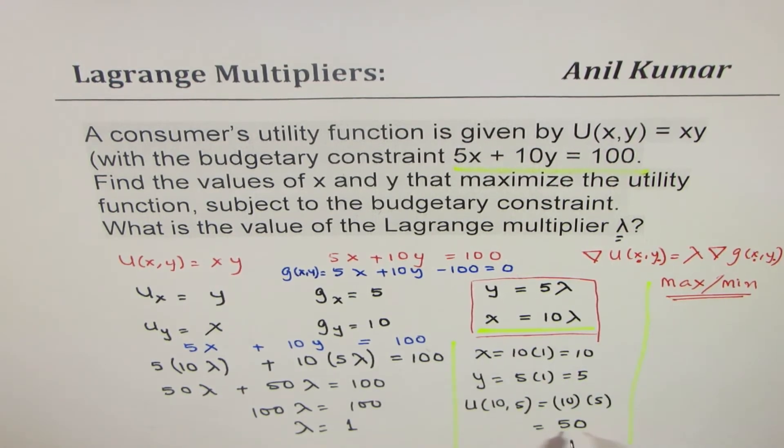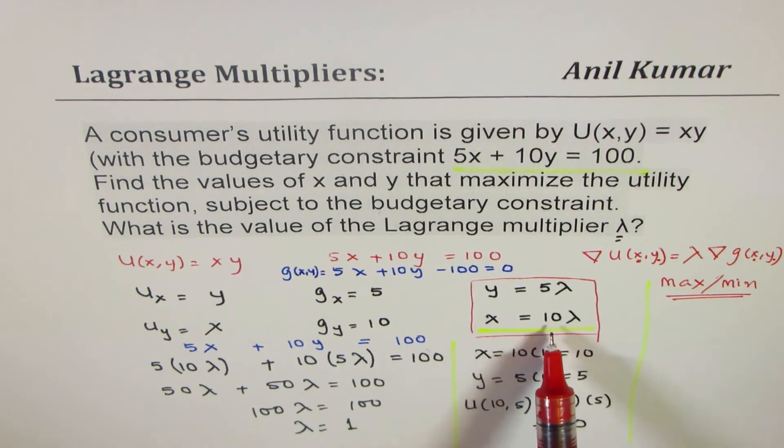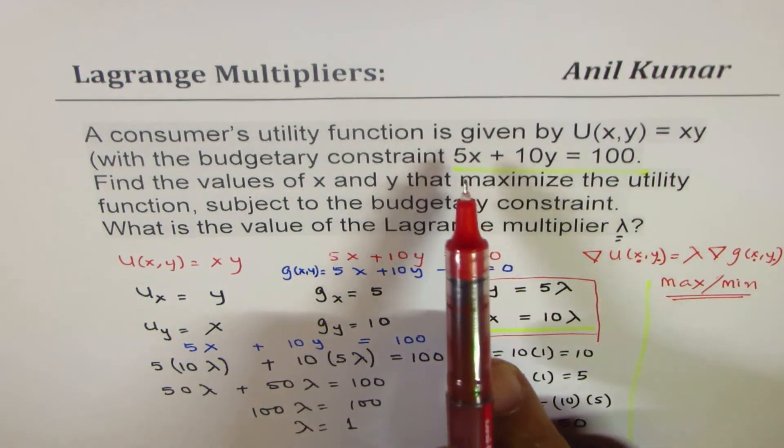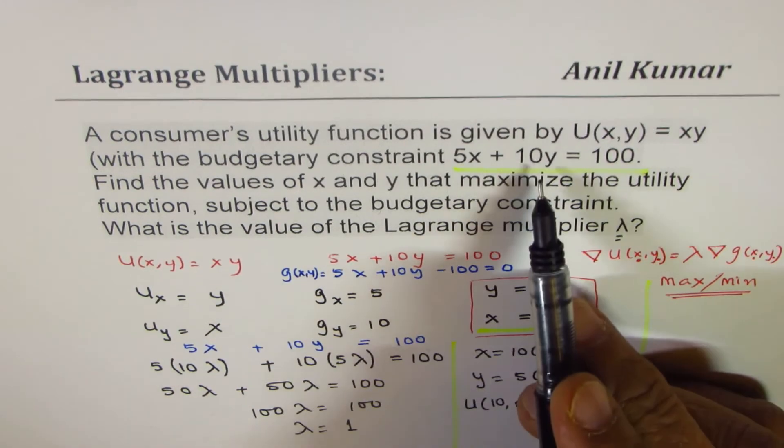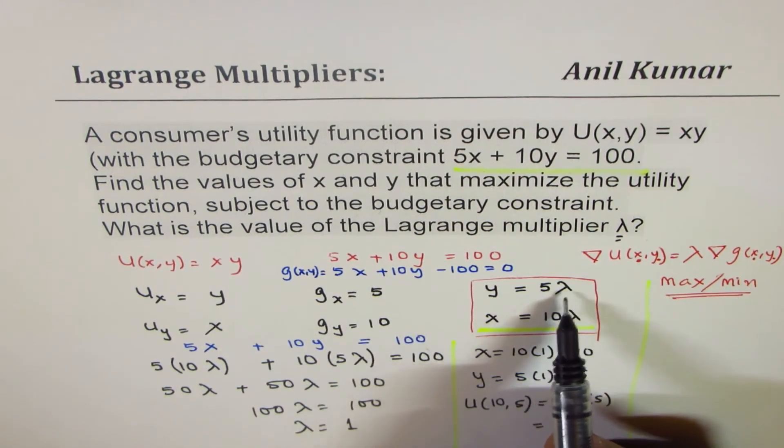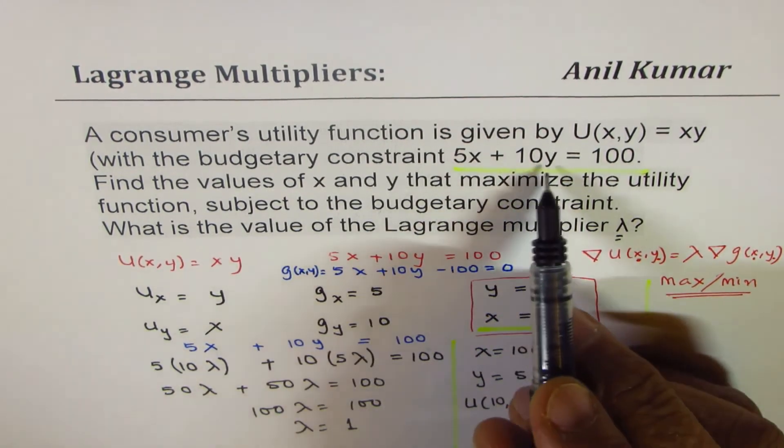So in our case, we found that x is 10, y is 5. This is our equation. So what we can do here is, instead of taking y as 5, lambda as 1, instead of taking y as 5, let's take y as 4.